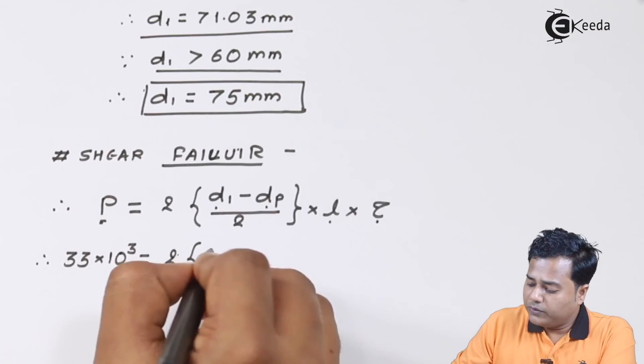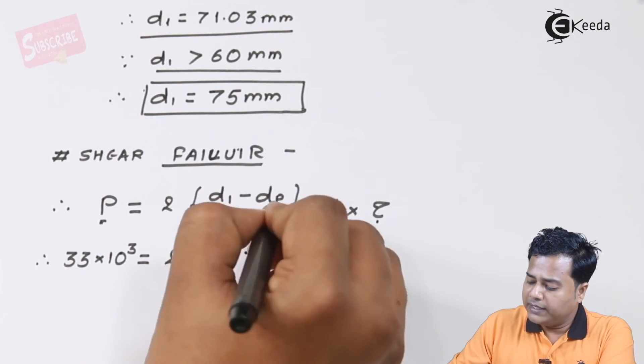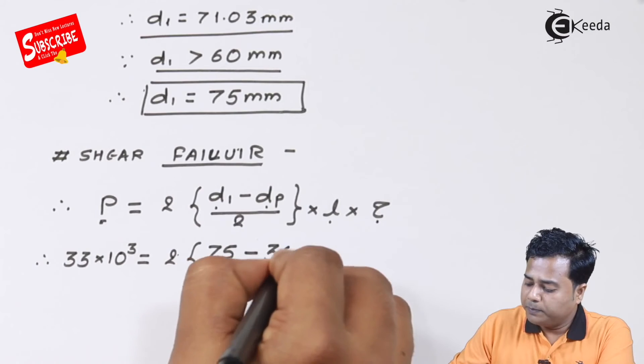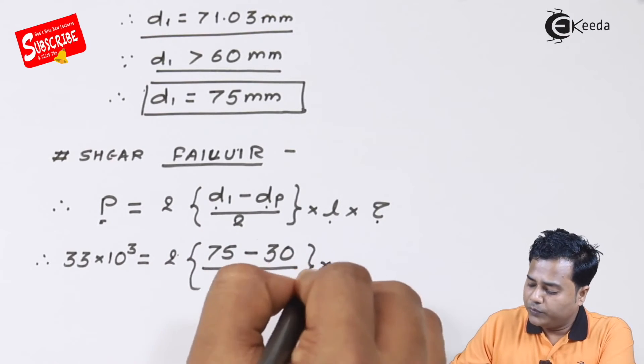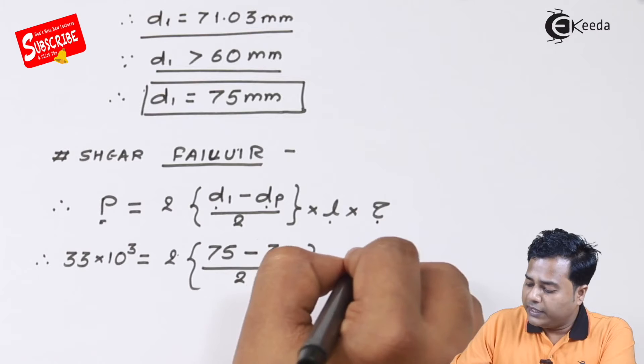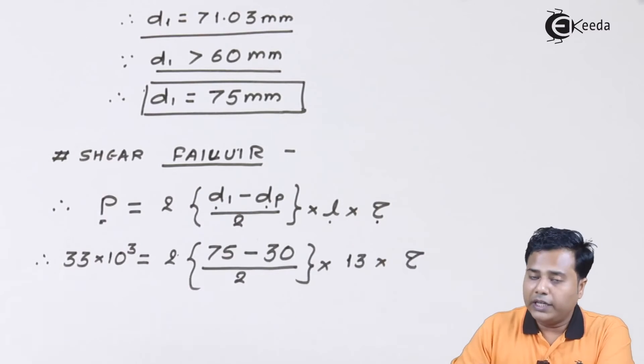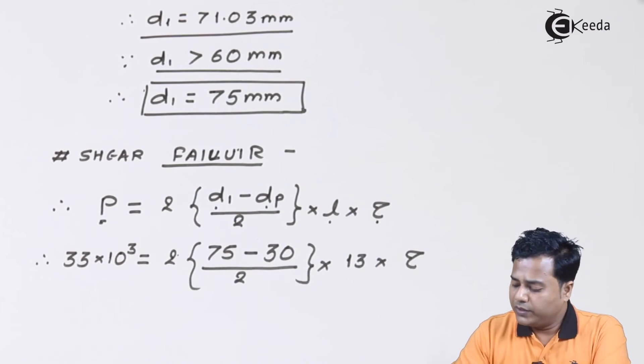When we substitute the value, it is 33 kilonewton equals twice (75 minus 30) divided by 2, into 13, into the τ which is going to be induced. If I solve this, the only parameter unknown is τ.